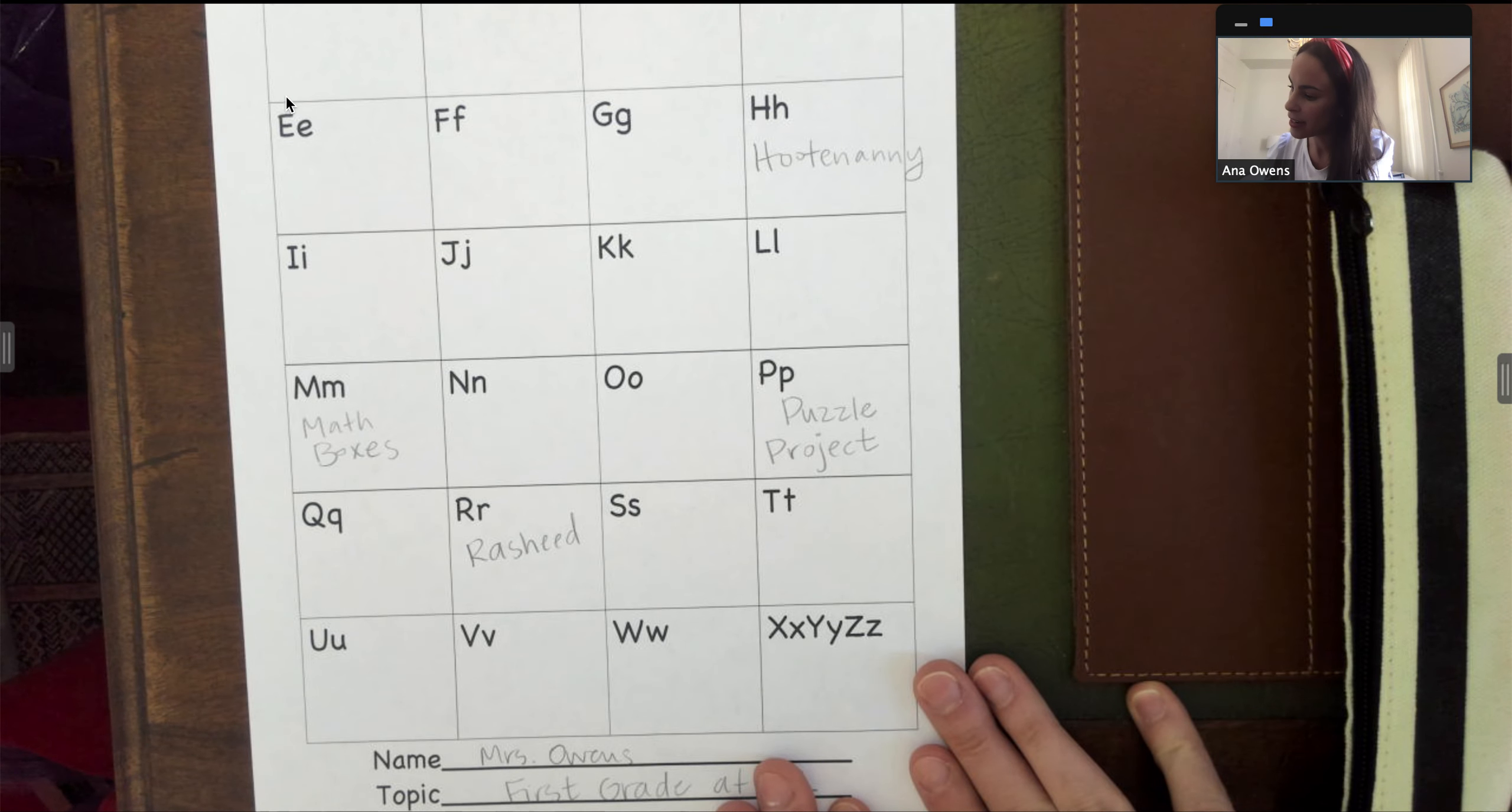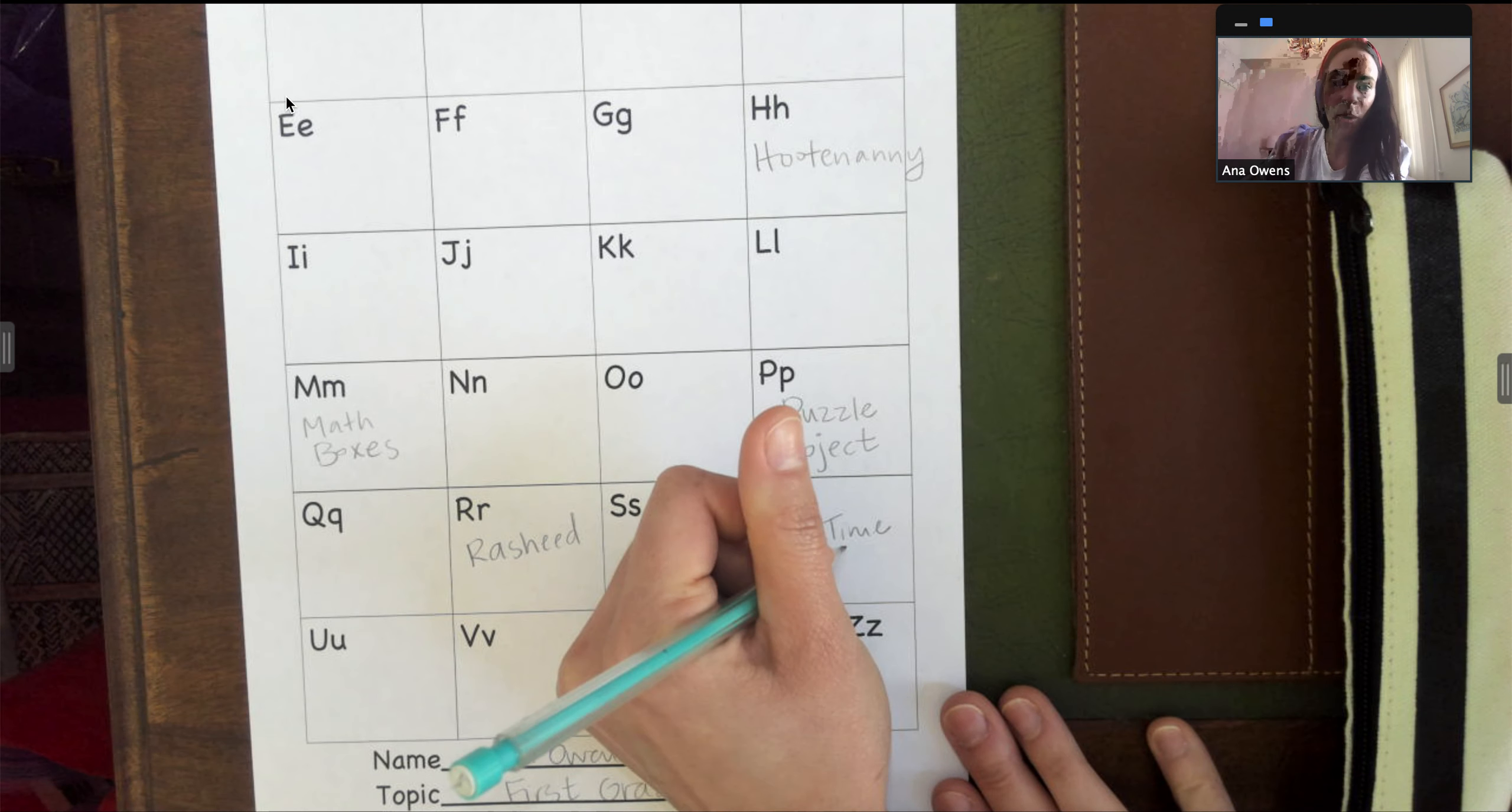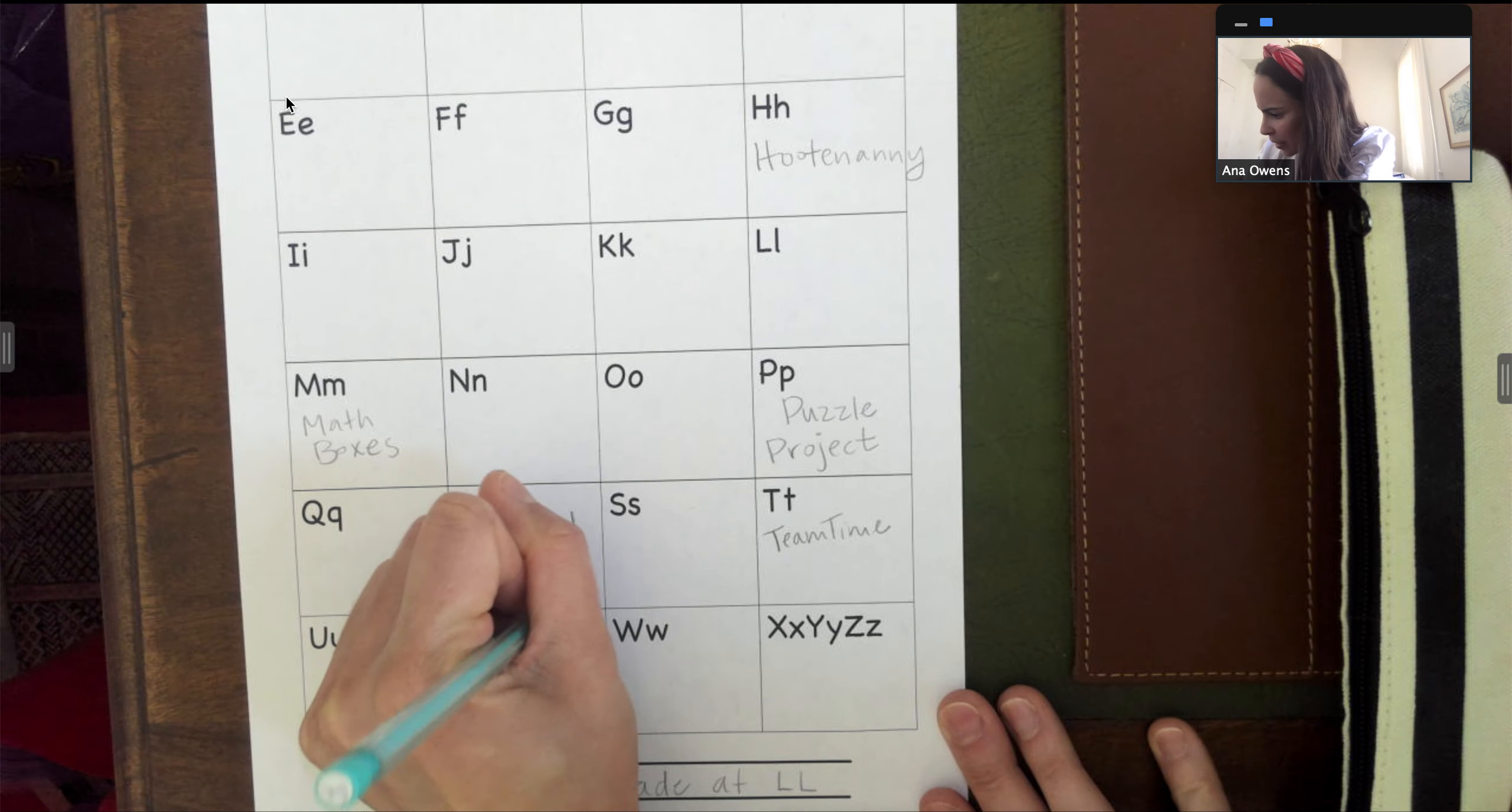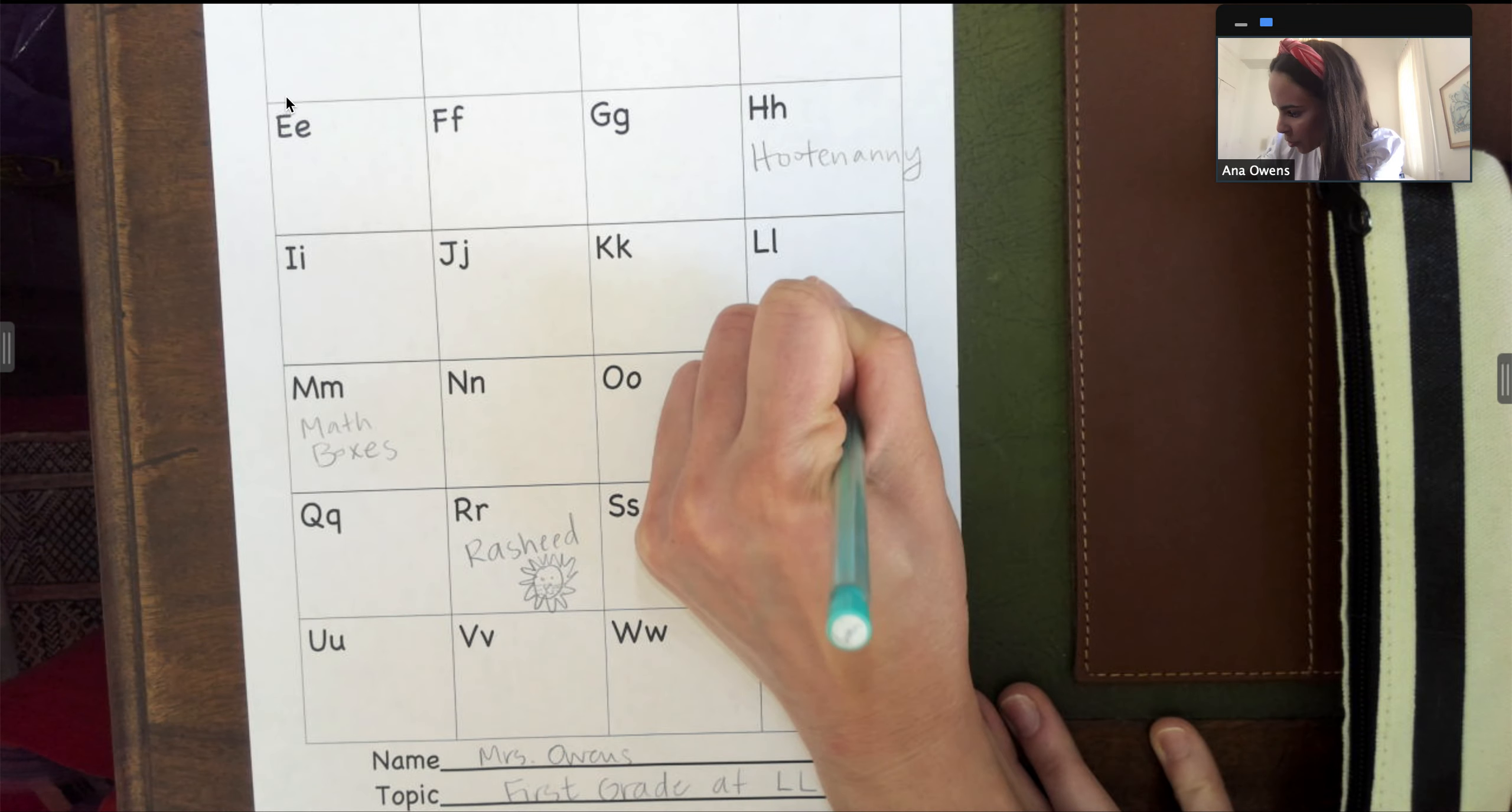I want you to try to fill up as many boxes as you can on this page and if you'd like to afterwards you can use your coloring items to draw some pictures to go with them. So I might draw Rasheed with all of his crazy lion hair. I might draw one of those locks we used on our puzzle boxes where you put the code in.